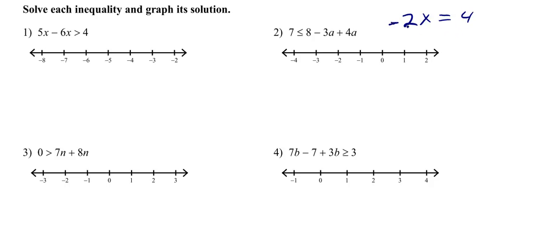So this is an equation, right? Negative 2x is equal to 4. You divide both sides by negative 2. X is equal to negative 2.